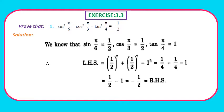Question 1: Prove that sin²(π/6) + cos²(π/3) − tan²(π/4) = −1/2. We know sin(π/6) = 1/2, cos(π/3) = 1/2, and tan(π/4) = 1. Substituting into the LHS: (1/2)² + (1/2)² − 1² = 1/4 + 1/4 − 1 = 1/2 − 1 = −1/2, which equals our RHS. Hence LHS = RHS. Pause and note down the proof.